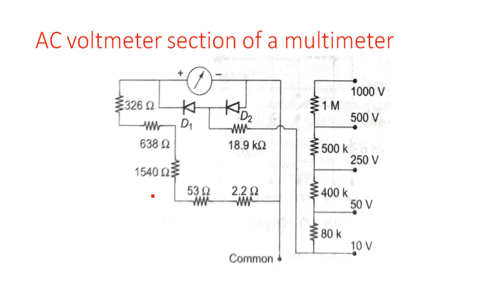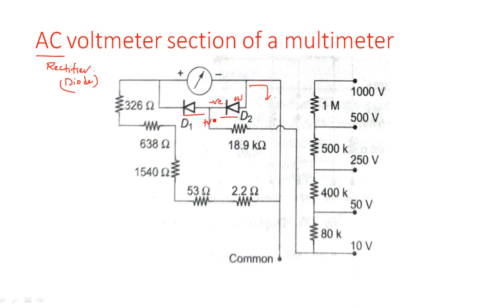Coming to the AC voltmeter section: since it is AC, we need to convert it using a rectifier element — a diode. Two diodes are present. If a negative voltage appears at the input, it makes the grounding diode conduct so it is grounded. If a positive voltage appears, the positive makes the other diode conduct and the meter works.